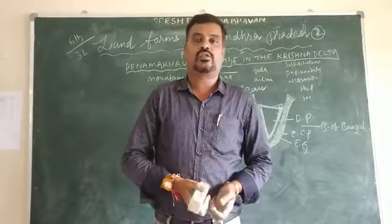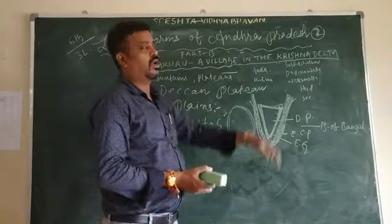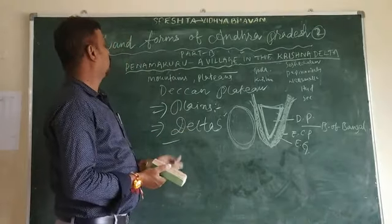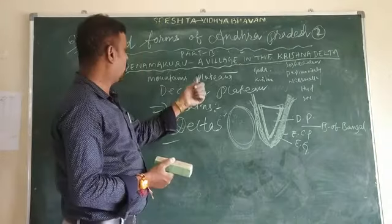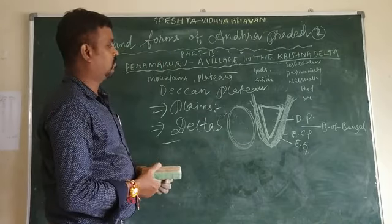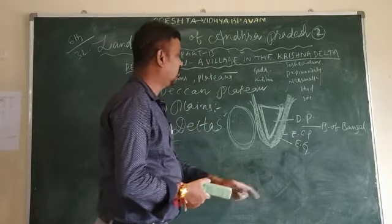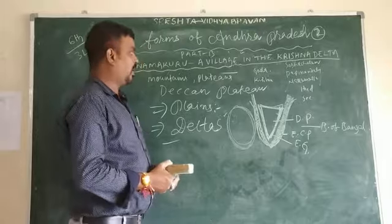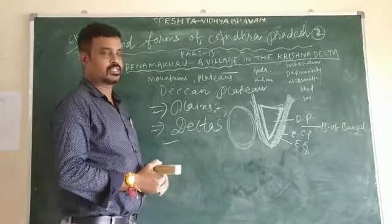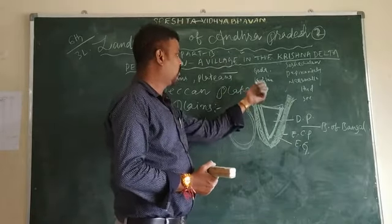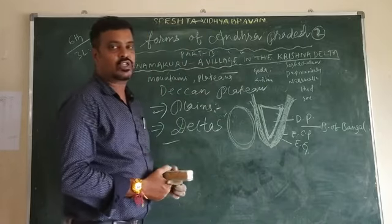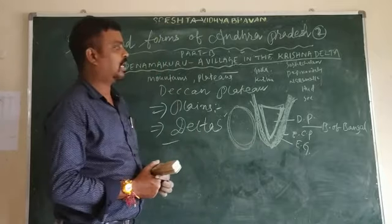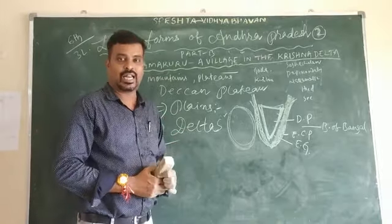Good morning, 6th class students. We are discussing the lesson 'Landowners of Undergrounds.' In the last class, we discussed mountains, patches, Eastern coastal plain, Bay of Bengal, Eastern Ghats, and the important plains. We also discussed deltas — the Godavari Delta and the Krishna Delta — and the important hills in Andhra Pradesh: Shishatsev hills, Padukondota hills, and Nala Malla hills.